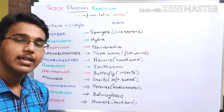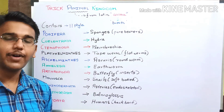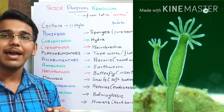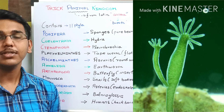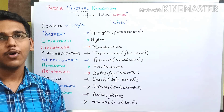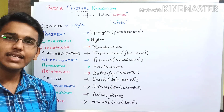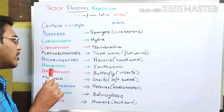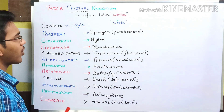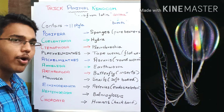Next we have phylum Coelenterata. The example of phylum Coelenterata is Hydra. These are mostly marine organisms which include some freshwater organisms also. Next we have phylum Ctenophora. The example of Ctenophora is Pleurobrachia. An important characteristic feature of Ctenophora is the presence of comb plates.